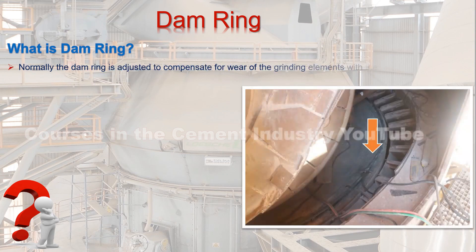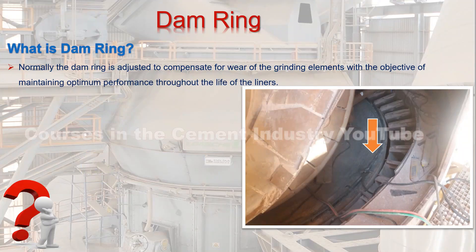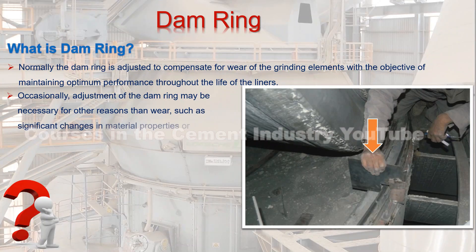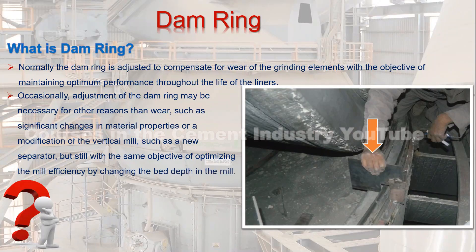Normally, the dam ring is adjusted to compensate for wear of the grinding elements, with the objective of maintaining optimum performance throughout the life of the liners. Occasionally, adjustment may be necessary for other reasons than wear, such as significant changes in material properties or a modification of the vertical mill, such as a new separator, but still with the objective of optimizing mill efficiency by changing the bed depth.